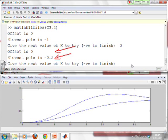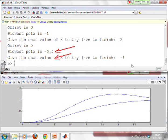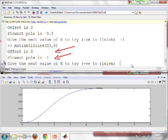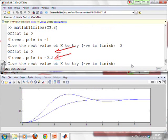It responds quite a bit faster, offset still 0, slowest pole still -0.5. Looking at this, the timescale of 4 is not quite right. I'll press -1 to finish and let's put a timescale of 8.